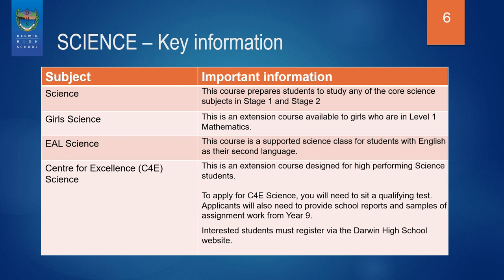Girls Science is an extension course available to girls who are in Level 1 Mathematics. EAL Science is a supported science class for students with English as their second language. Centre for Excellence, or C for E Science, is an extension course designed for high performing science students. If you're interested in C for E Science, please see the Darwin High School website for more information.